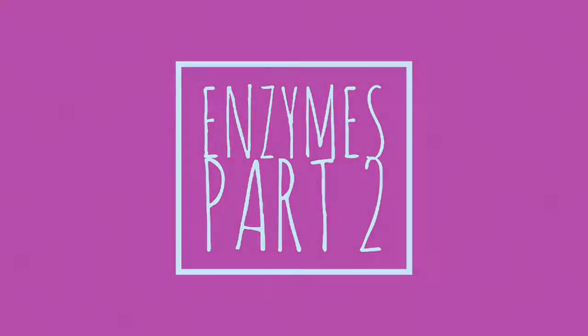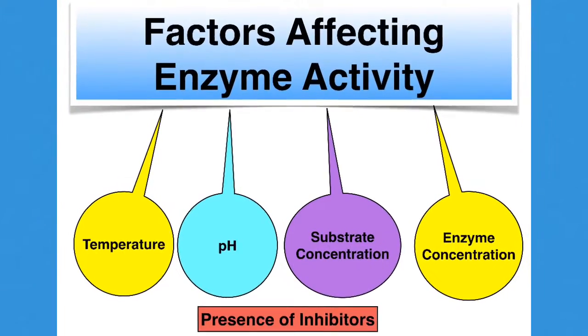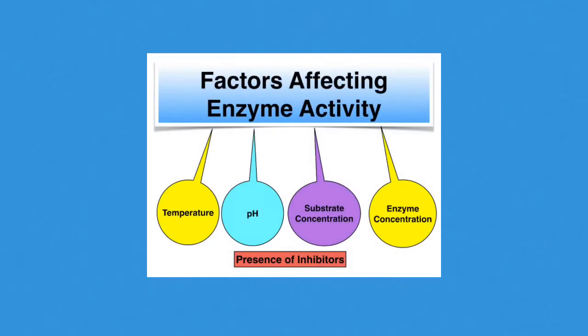This is the second video on enzymes. What are the factors that affect enzyme activity? There are five factors: temperature, pH, substrate concentration, enzyme concentration, and the presence of inhibitors.